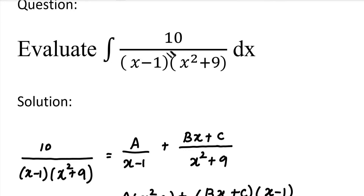The first factor has power one, so it is a linear factor. The second factor is x squared plus 9. This is not a linear factor — it is a quadratic factor. We apply partial fraction depending on whether the numerator constant is present.